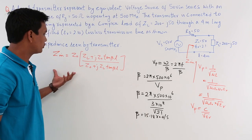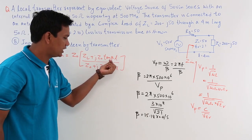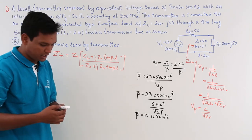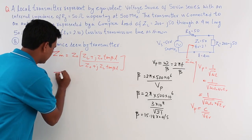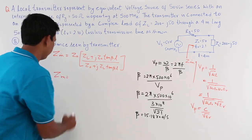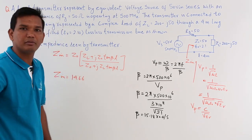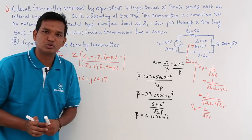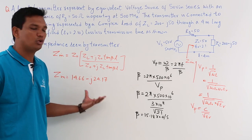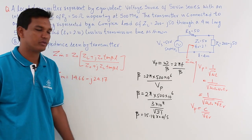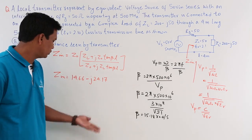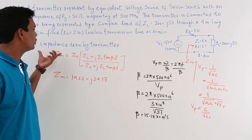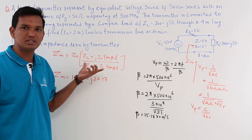Once you have β, there is nothing left in the question, because length L = 4 meters and β = 15.18 — you can easily get βL. You just put the values in your calculator and find the input impedance. The input impedance in this problem comes out to be 14.66 − j24.17 ohms. This is the input impedance. The key step was finding β. In the next videos we will see one more question on this topic and how to proceed.